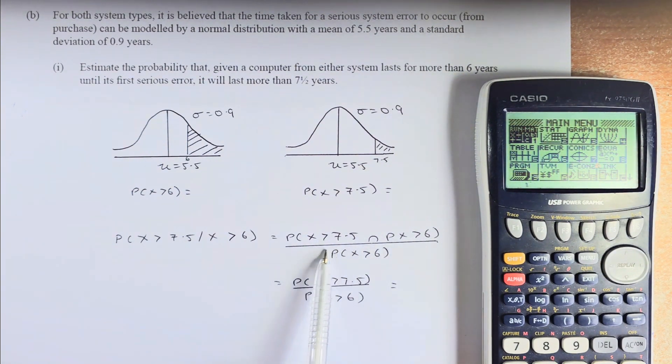So this part here, greater than 7.5 and greater than 6, can be simplified to X greater than 7.5 and the denominator is going to be X greater than 6. So if you can find the probability X greater than 7.5 and probability of X greater than 6, we can calculate this question.